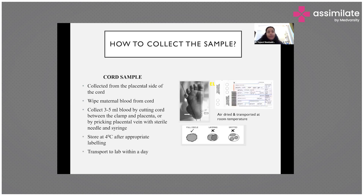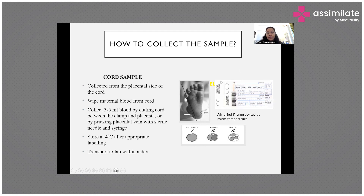For cord blood collection, 3 to 5 ml of blood is collected from the placental side of the cord by cutting between the clamp and placenta and using a syringe to draw from the placental vein. It can be stored at 4 degrees and transported to the lab within the day. For the heel prick sample, prick only on the sides of the heel — never the center — and ensure drops form a full circle on the newborn screening card. The card should be air dried and transported at room temperature.